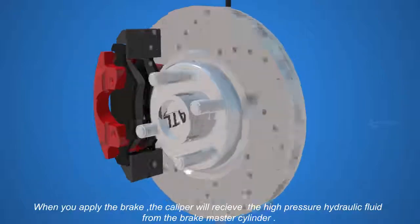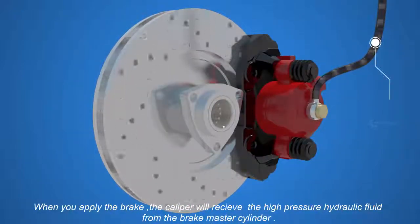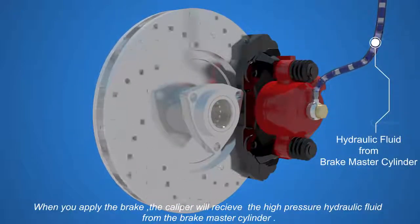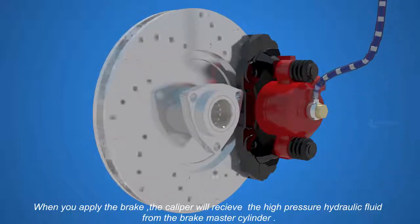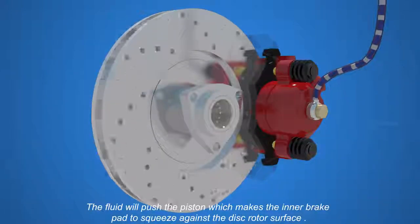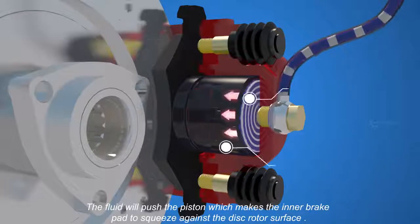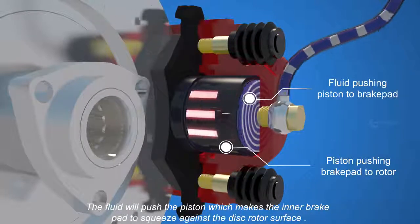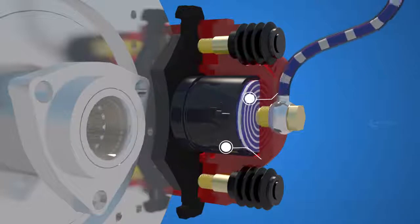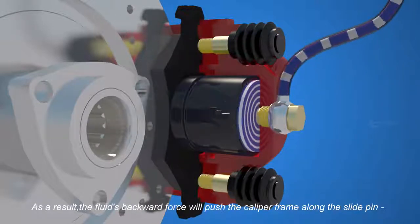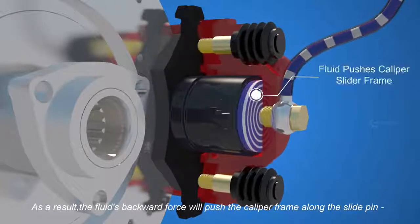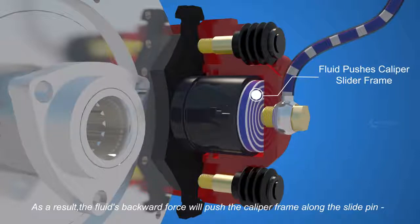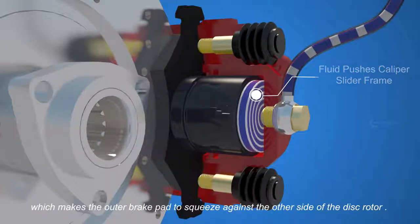When you apply the brake, the caliper will receive the high pressure hydraulic fluid from the brake master cylinder. The fluid will push the piston, which makes the inner brake pad squeeze against the disc rotor surface. As a result, the fluid's backward force will push the caliper frame along the slide pin, which makes the outer brake pad to squeeze against the other side of the disc rotor.